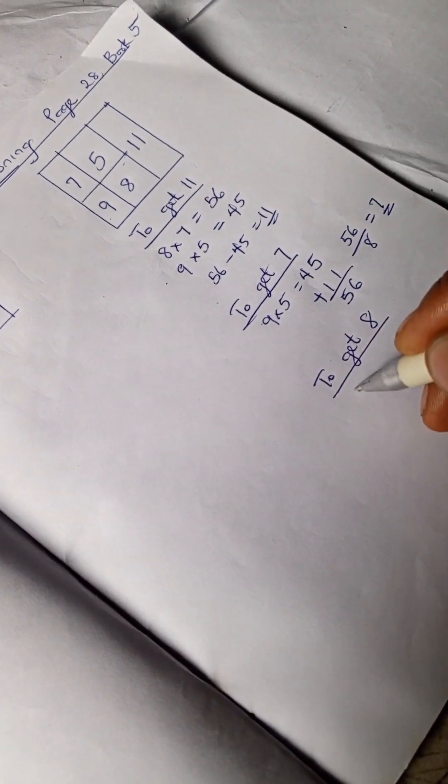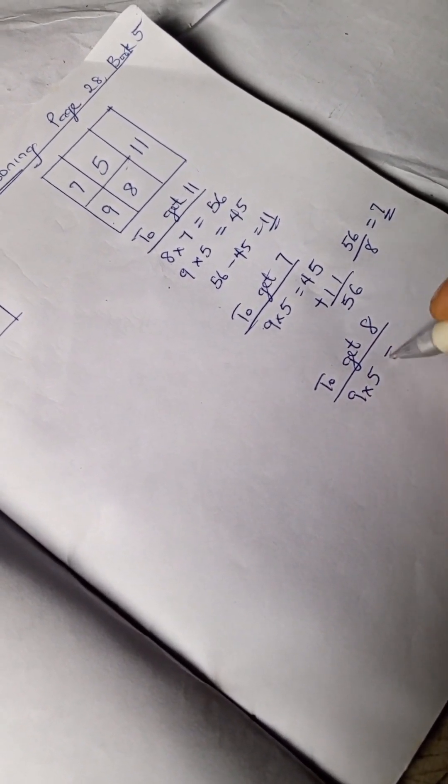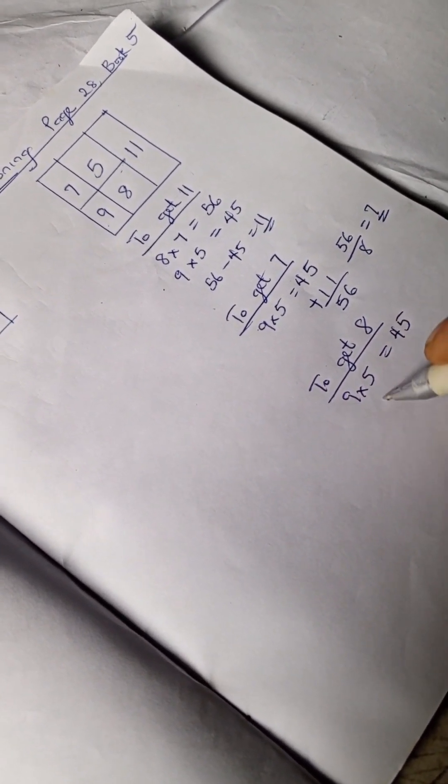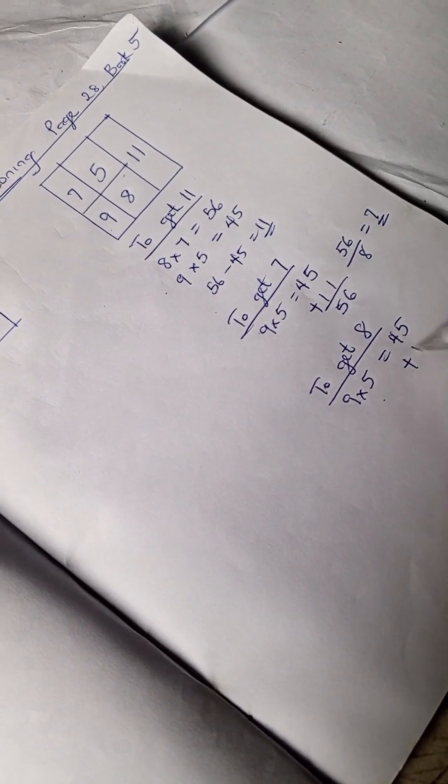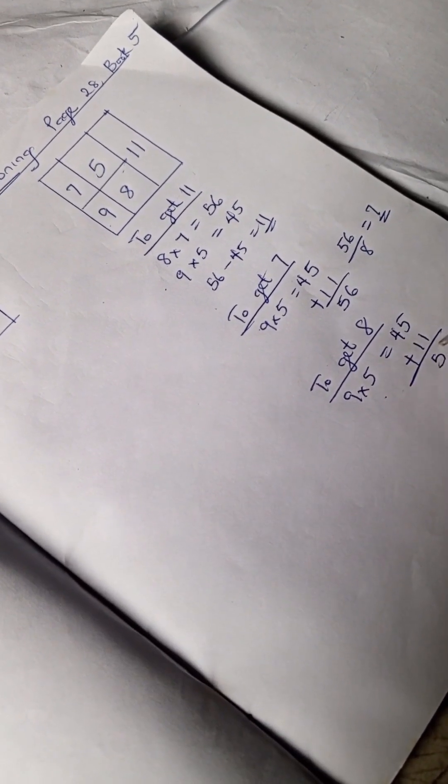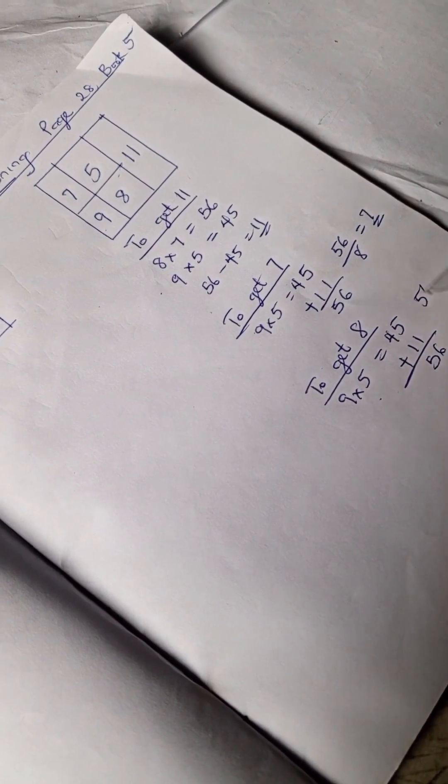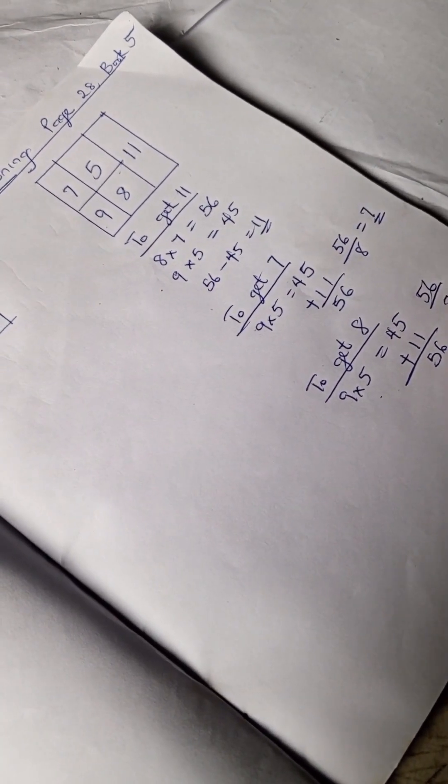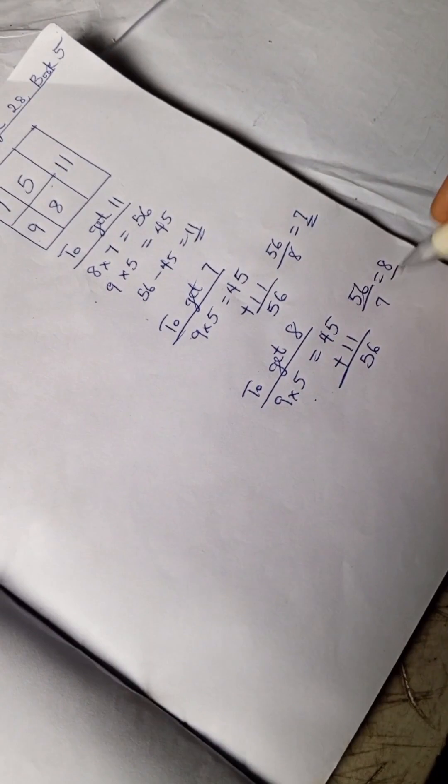So to get 8, we're going to do the same thing: 9 times 5 is 45, and we're going to add 11 to it, which is 56. So 56 divided by 7 is 8. Next we are going to find...